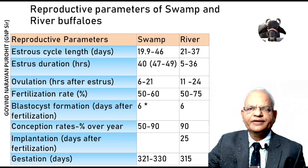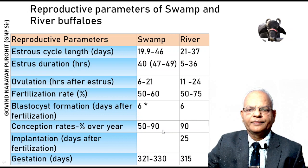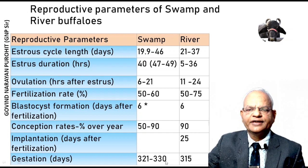These are the reproductive parameters of swamp and river buffaloes. The estrus cycle length and duration are similar, with estrus duration slightly longer in the swamp buffalo. Ovulation occurs 6 to 21 hours after estrus. Fertilization rate and blastocyst formation are nearly similar between types. Conception rates are higher in the river buffalo. Implantation occurs at around 25 days in the river buffalo. The swamp buffalo has a slightly longer gestation of 321 to 330 days compared to 315 days in the river buffalo.